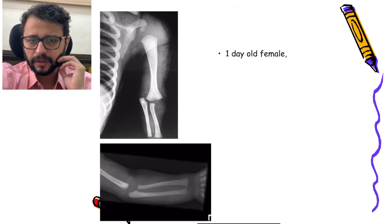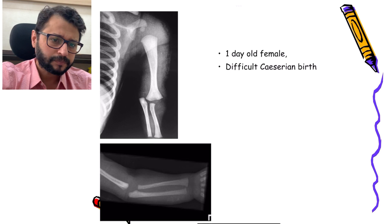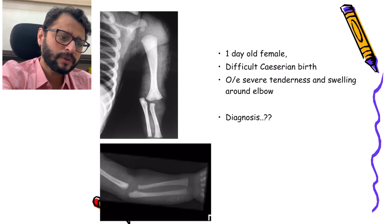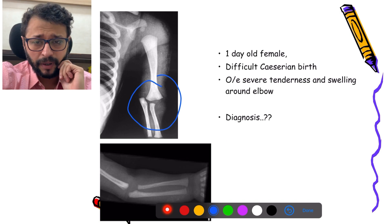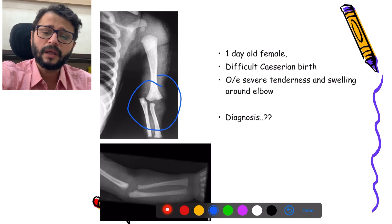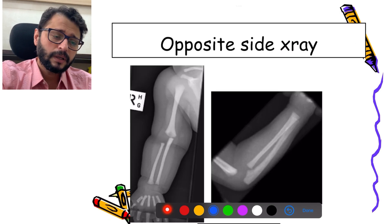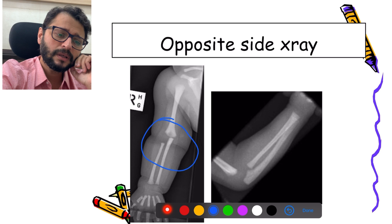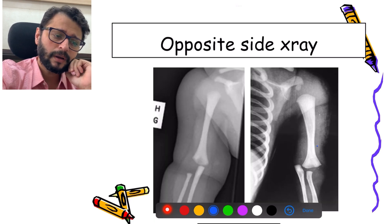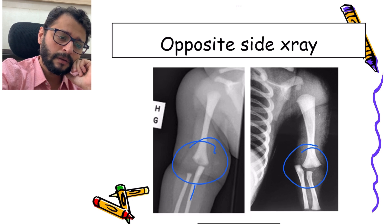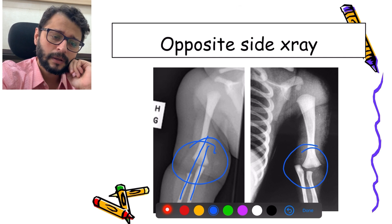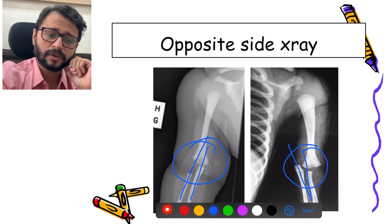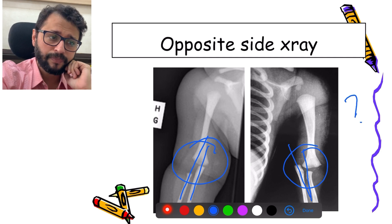The first case: a one-day-old female neonate, just born after a difficult caesarean birth, has severe tenderness and swelling around the elbow. The typical diagnosis given by the radiologist unfortunately is an elbow dislocation. Fortunately, we have the opposite side to compare. On the normal side x-ray, the ulna and radius are in line with the humerus. In this x-ray, the ulna and radius are directed posteromedially compared to the humerus.